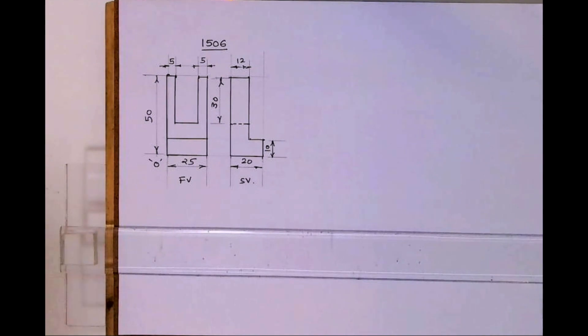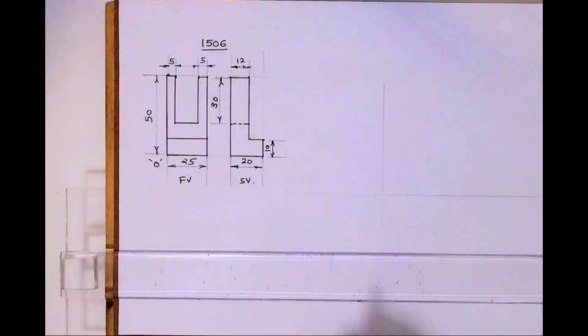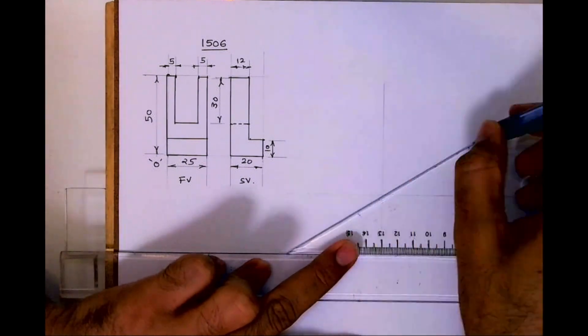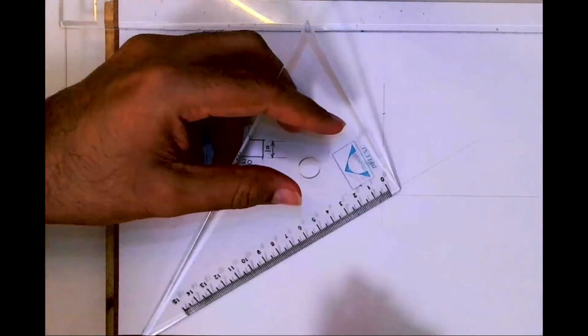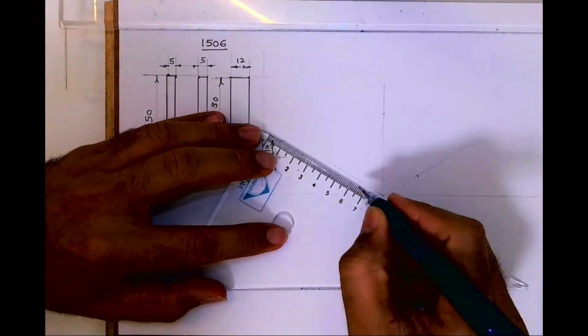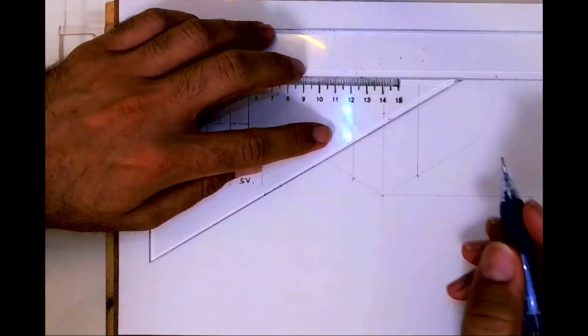Welcome to technical drawing. Today we'll see this isometric seminar. First, we'll draw the layout. We'll take 30 degrees on both sides, with height 50, length 25, and width 20.